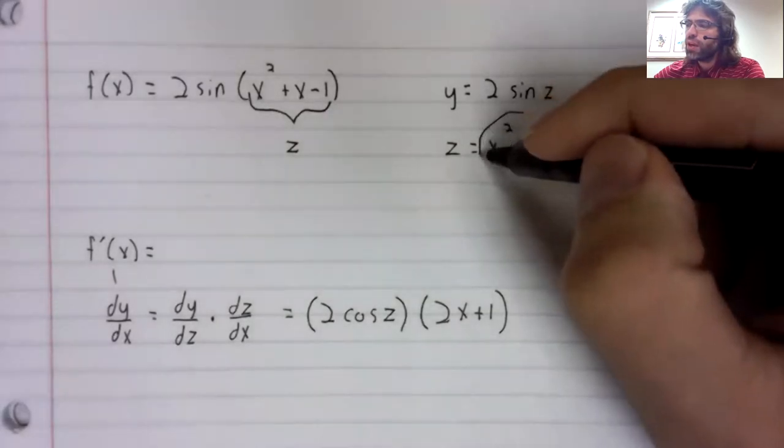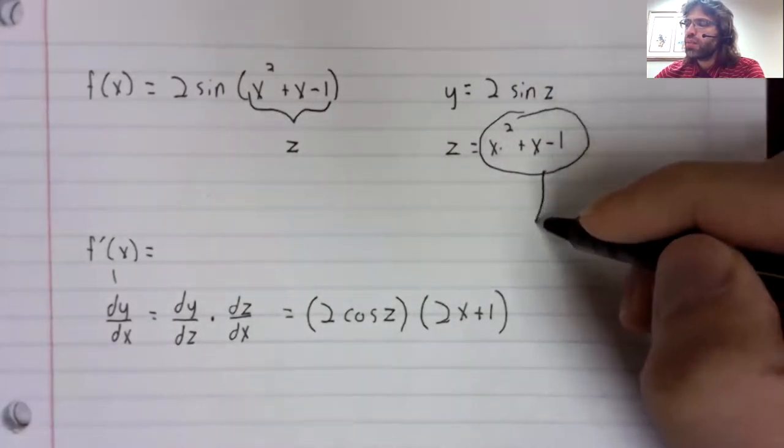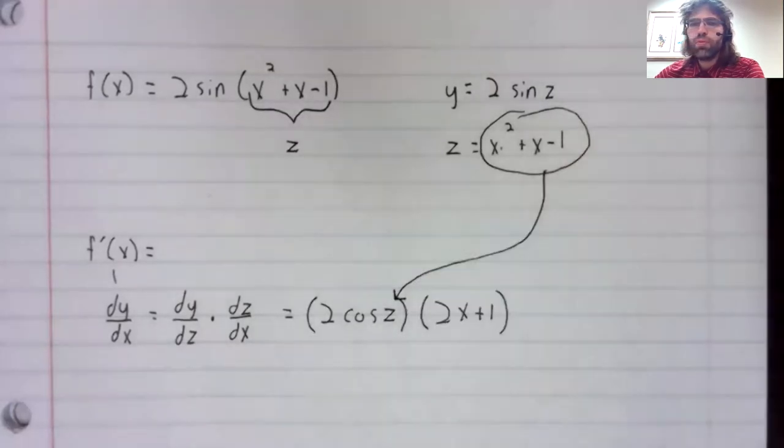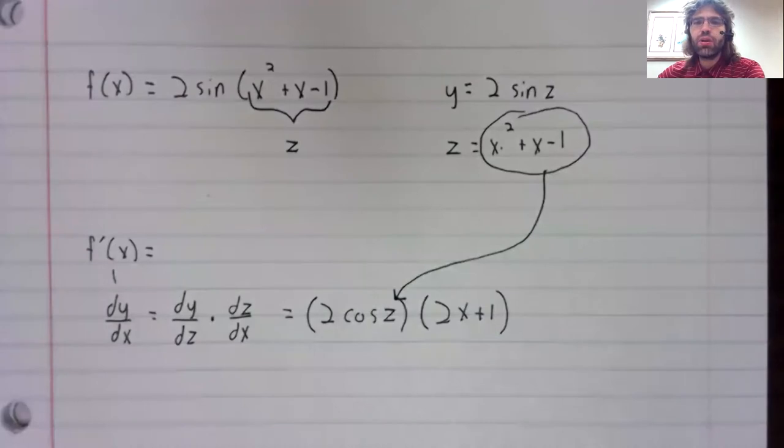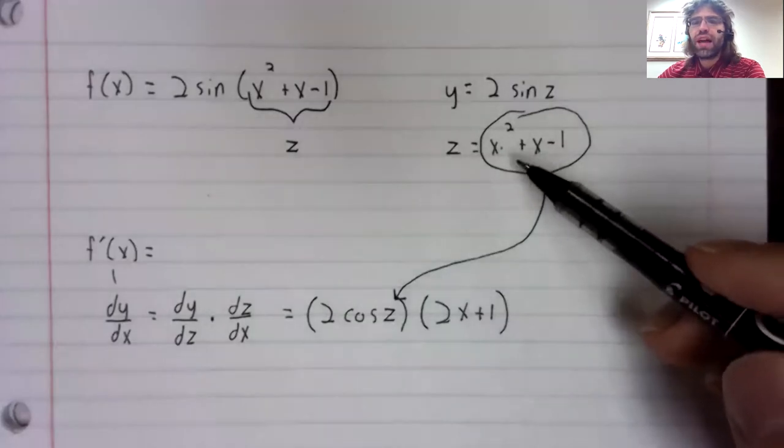Well, we ran into the same situation in our first example in the previous video. We can write z in terms of x.